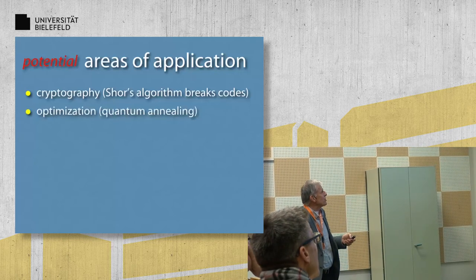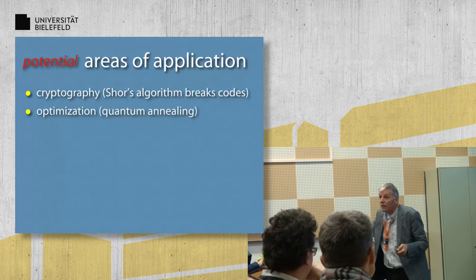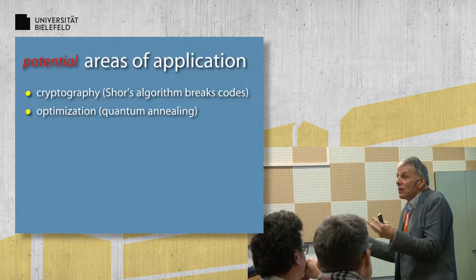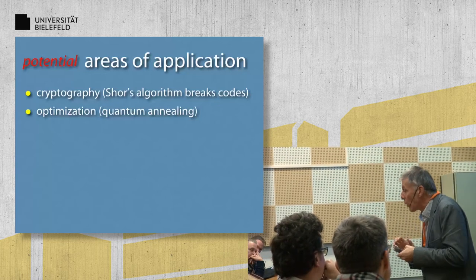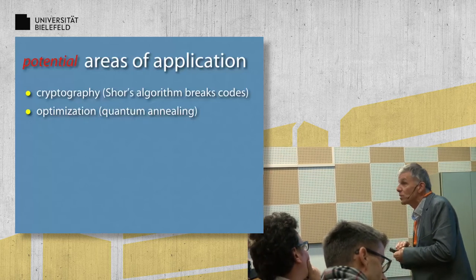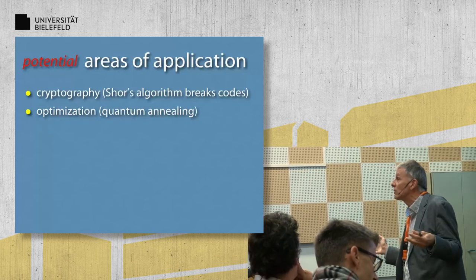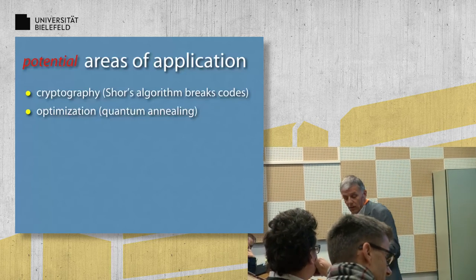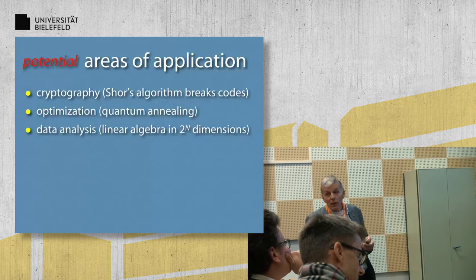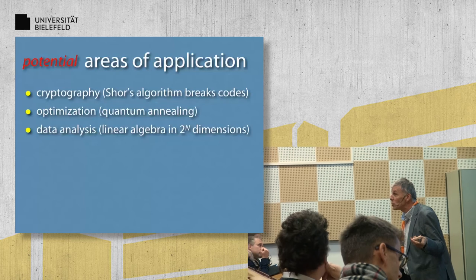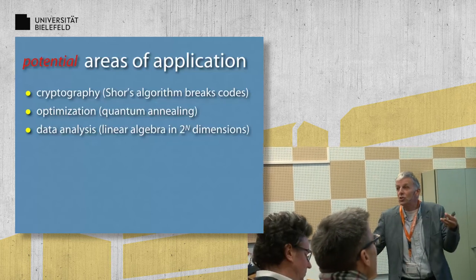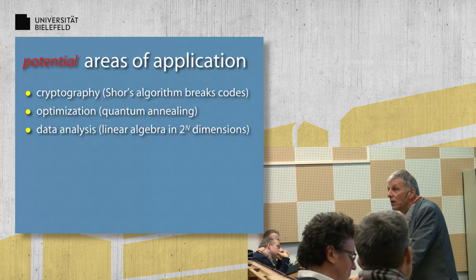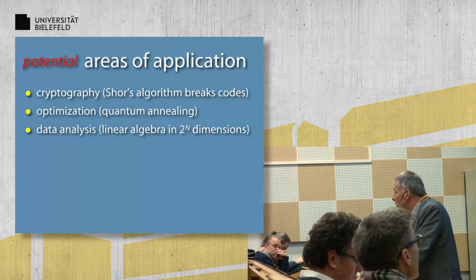So what are the applications? Quantum annealing could be one if somehow we have hope that there is some reason as a matter of principle why a quantum computer would be better at finding minimum potential landscapes than a classical computer. There is no reason we know of. Time will tell. Linear algebra. Quantum mechanics is linear algebra. I told you about two by two matrices. So quantum mechanics is just linear algebra. And yes, a quantum computer is very good at linear algebra - matrix inversion. So this could be one area of application.